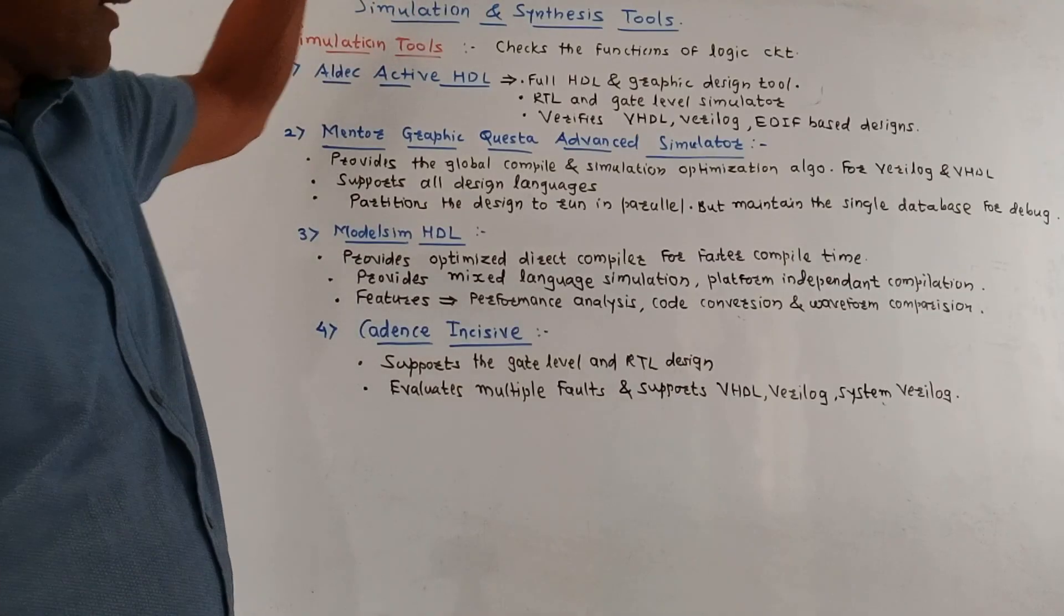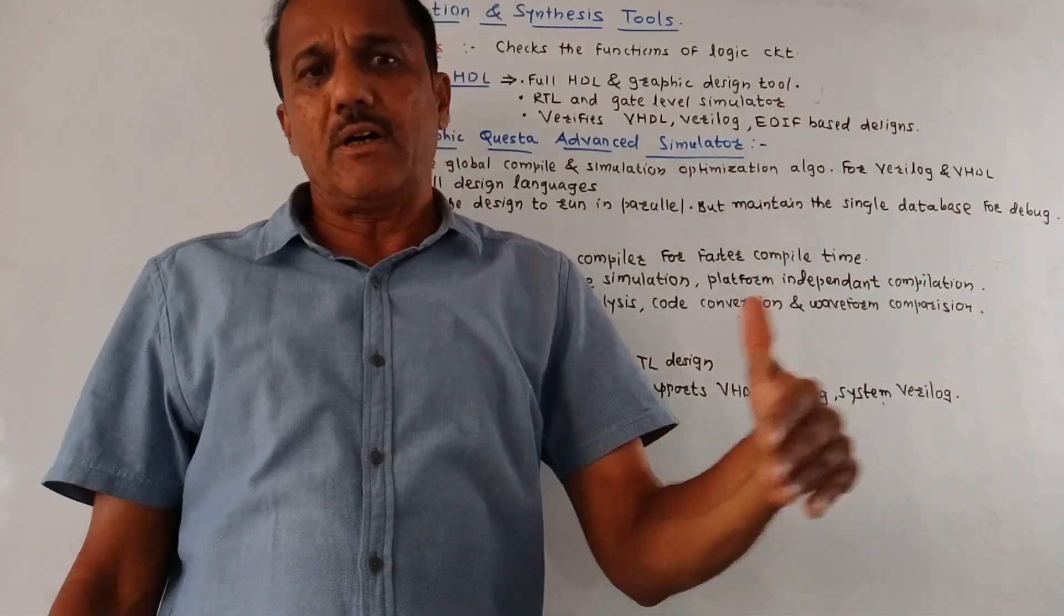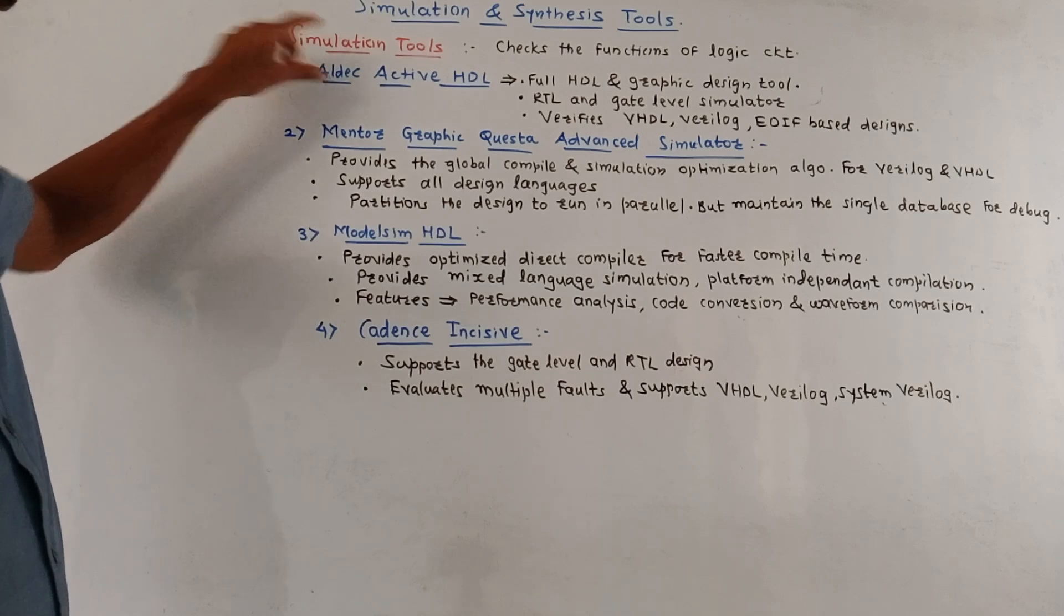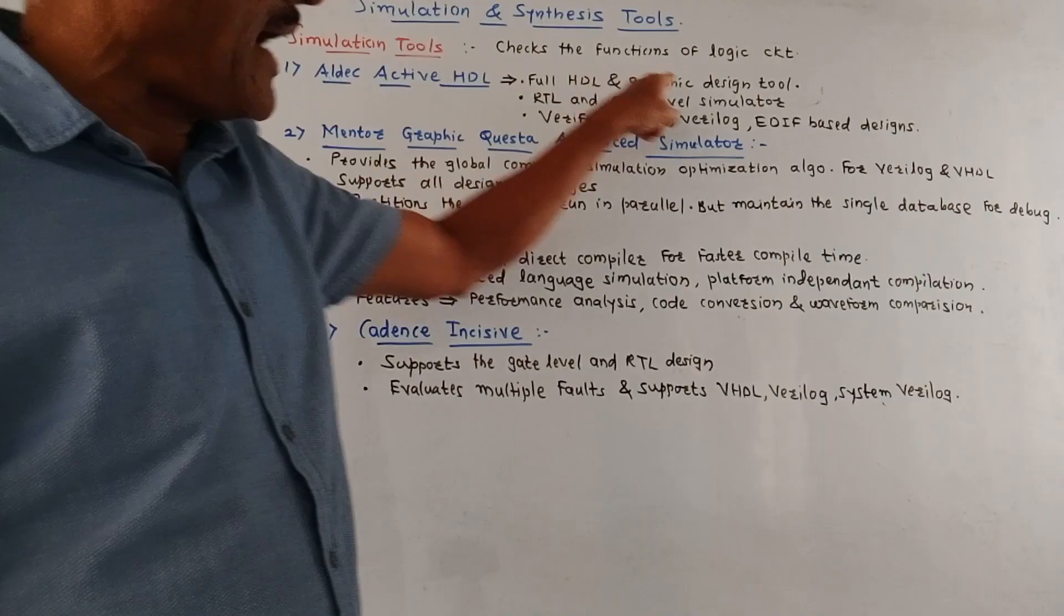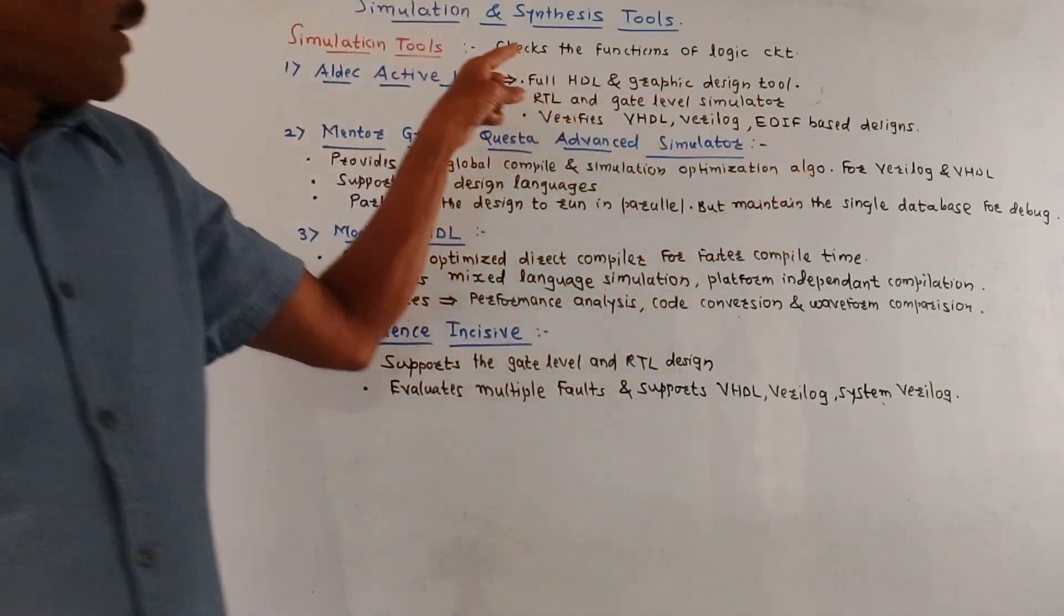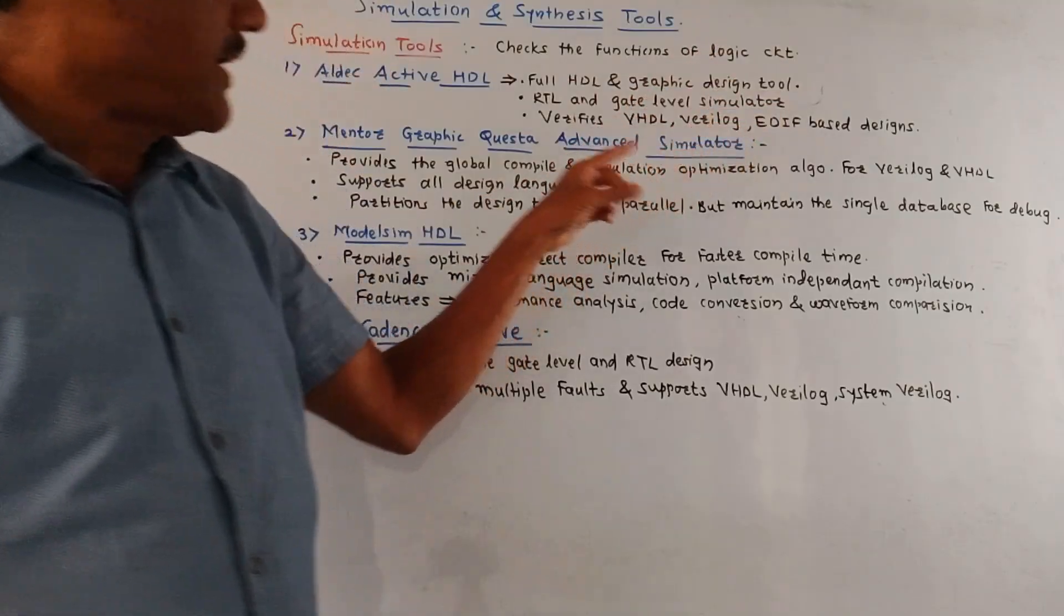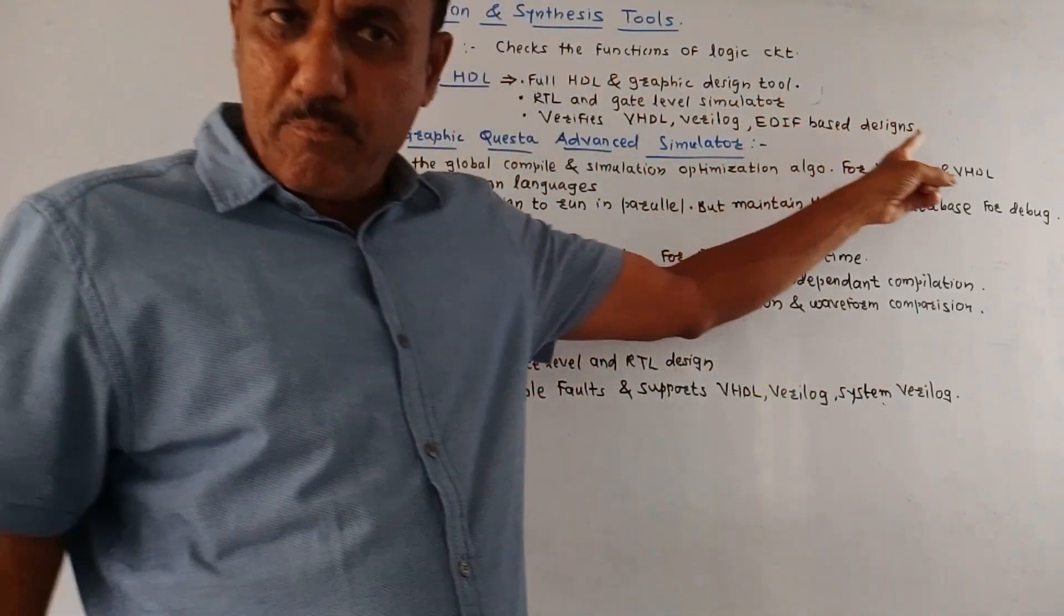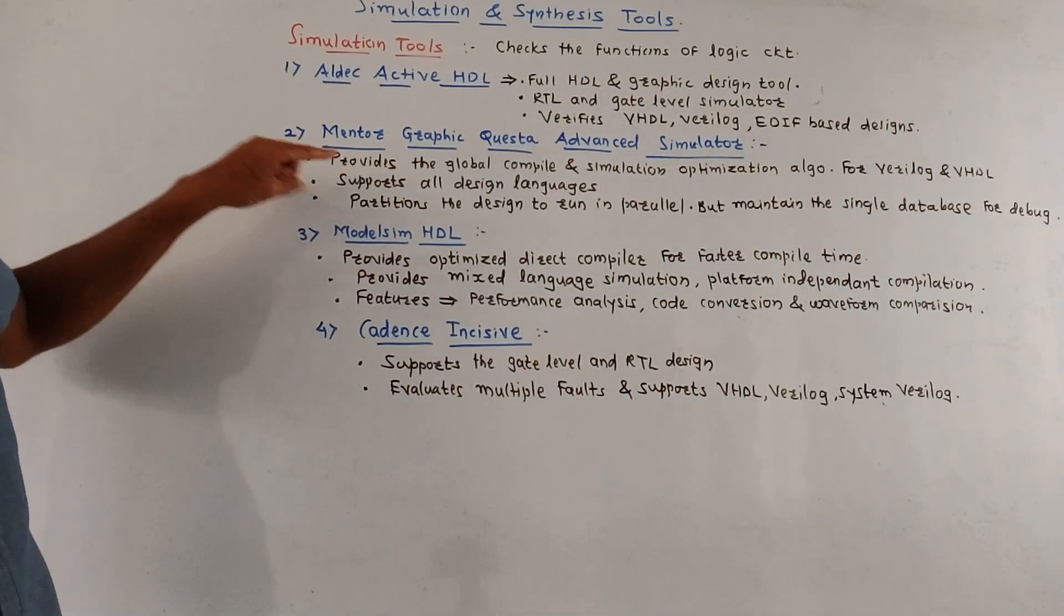So first we will discuss some important simulation tools. These simulation tools are useful for checking the functions of the logical circuits. So first simulation tool is Aldec Active HDL. It is full HDL and graphic design tool. It is basically RTL and gate level simulator and it verifies VHDL, Verilog and EDIF page designs. So I have written some important points related to each and every tool.